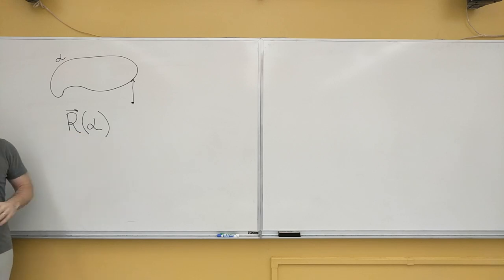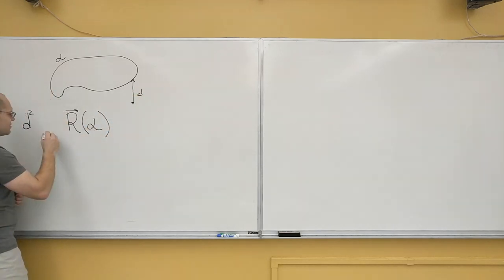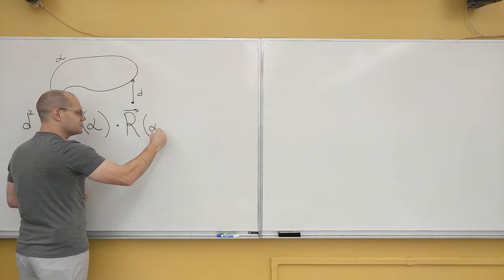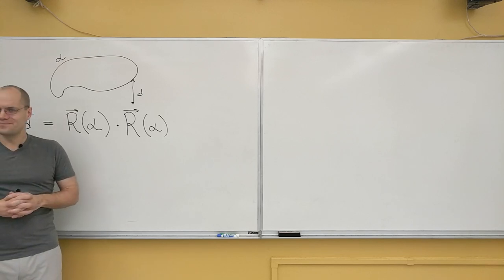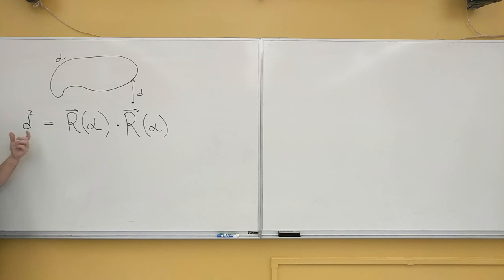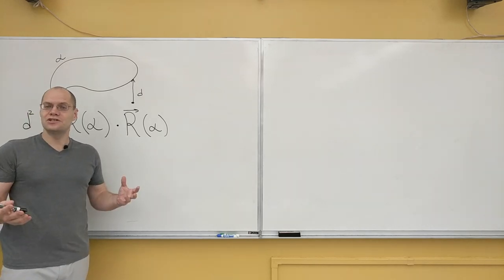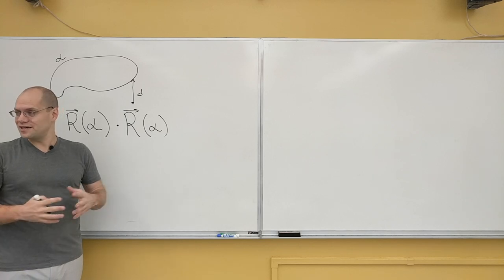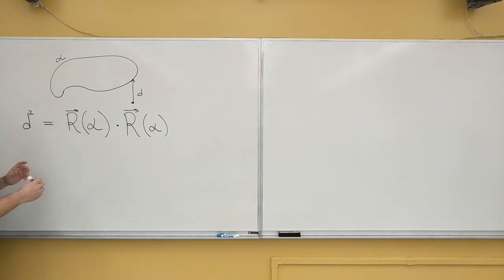We're going to minimize the length of this vector, or might as well minimize the length squared. The length I'll denote by D; the length squared is R(α) dotted with itself. We'll do the only thing we can do, which is take the derivative—that's how you find minima: you differentiate the function and set the derivative to zero. We don't like square roots unless we need them; there's no difference between minimizing the distance or the distance squared because x² is a monotonic function. We'll take the derivative of both sides.